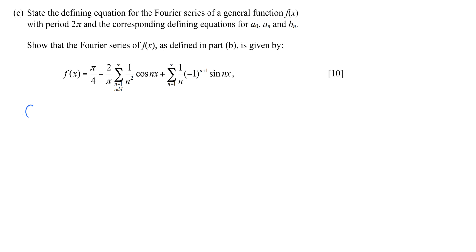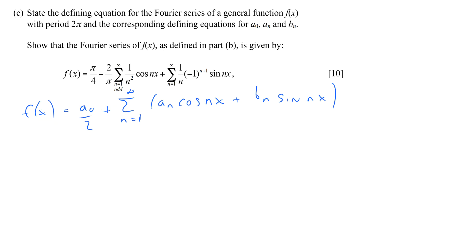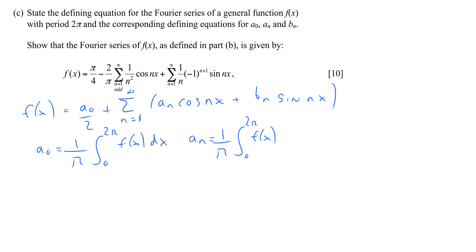If we do this, we find that f(x) is given by a₀ over 2, then the sum n equals 1 to infinity of aₙ cos(nx) plus bₙ sin(nx). That's the definition of the Fourier series. Then a₀ is given by 1 over π times the integral between 0 and 2π of f(x) dx. aₙ is given by 1 over π times the integral between 0 and 2π of f(x)cos(nx) dx, and bₙ is given by 1 over π times the integral between 0 and 2π of f(x)sin(nx) dx. These are the formulas to use when our function has a periodicity of 2π, which is the case in this question.